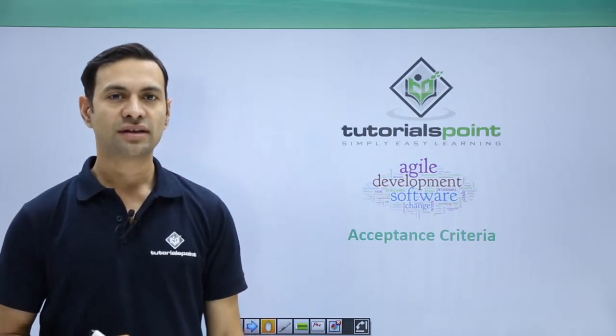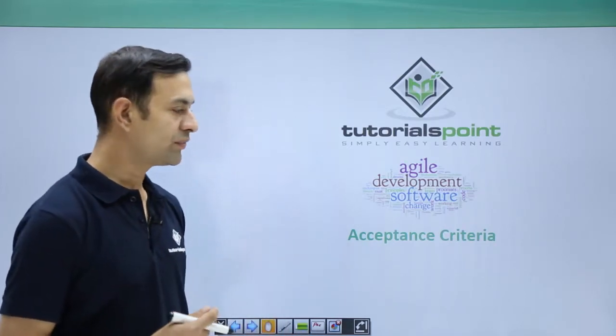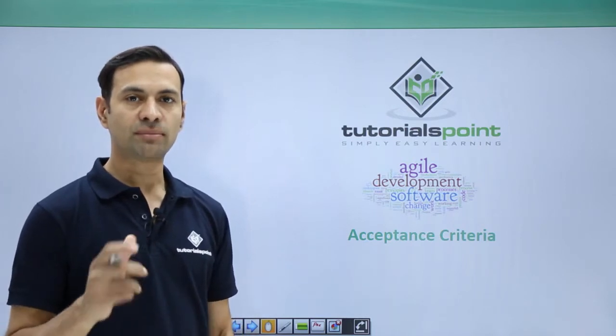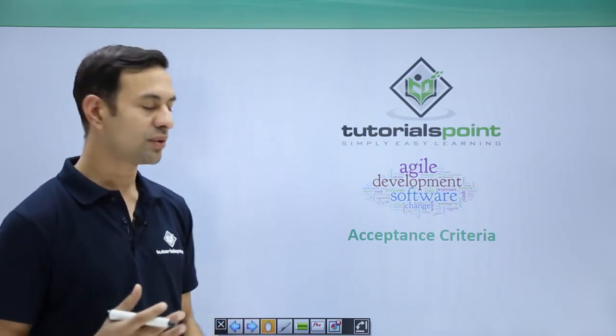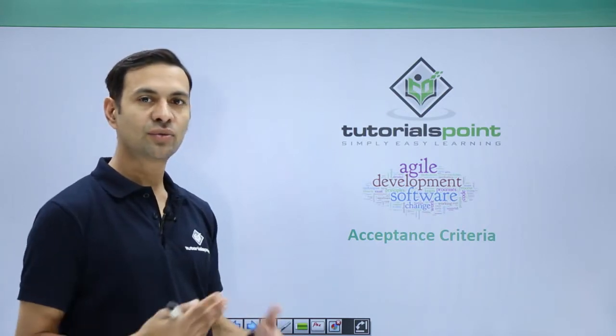Hello friends, welcome to Tutorials Point. As we all know, in Agile we follow an iterative model and implement a small set of requirements per iteration. So it is very important to know what is acceptance criteria for a user story or a feature which is getting implemented.